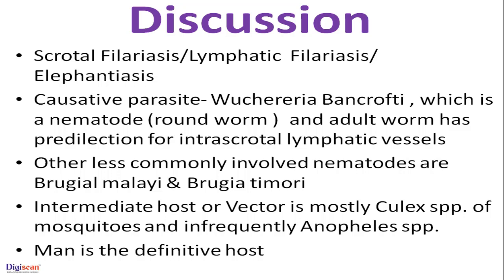Wuchereria bancrofti is a nematode, or round worm, and the adult worm has a predilection for intrascrotal lymphatic vessels. Other less commonly involved nematodes are Brugia malayi and Brugia timori. The intermediate host, or vector, is mostly Culex species of mosquitoes and infrequently Anopheles species. Man is the definitive host.